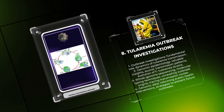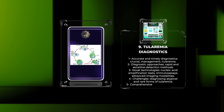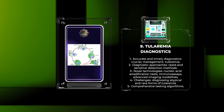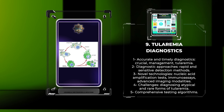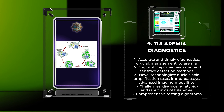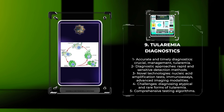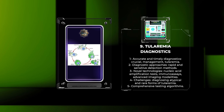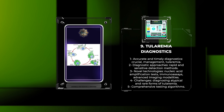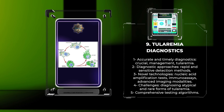Outbreak investigations play a fundamental role in understanding the dynamics of tularemia transmission. Genomic epidemiology in particular provides valuable insights into the source, transmission patterns, and evolution of F. tularensis strains. This section will highlight the use of whole genome sequencing and molecular typing techniques in unraveling outbreak origins and tracing transmission routes, and discuss the application of genomic data in informing public health interventions and strategies to prevent future outbreaks.